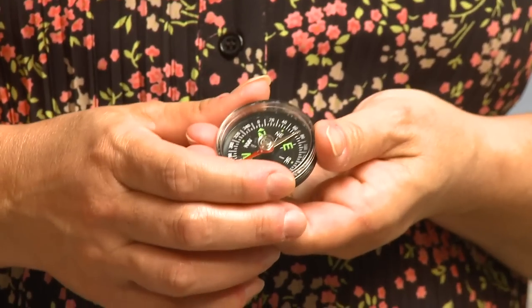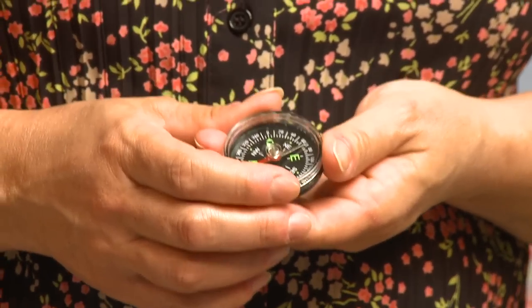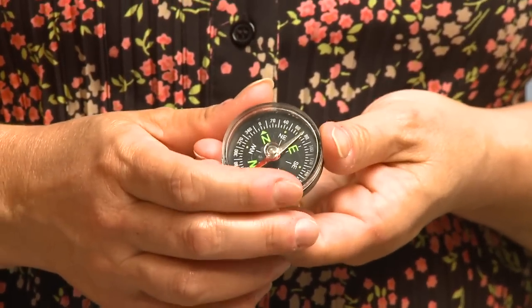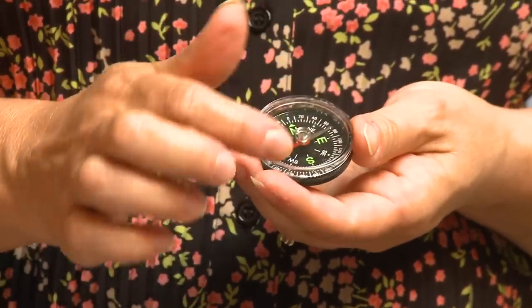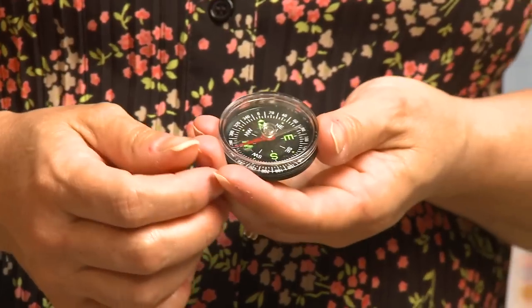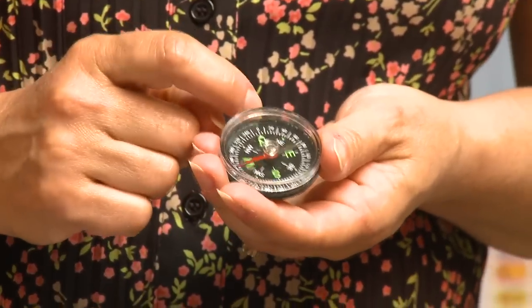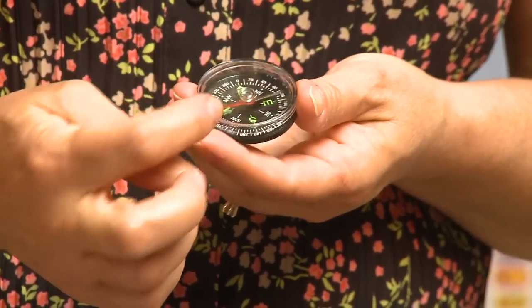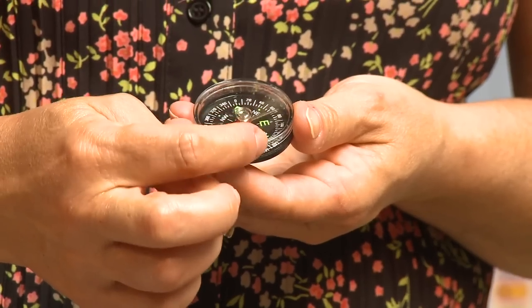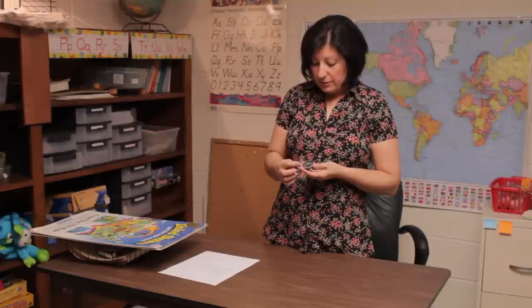Step one would be to explain to the child what a compass is used for. They need to understand the four basic geographic directions. A good way to help them remember that is to use a mnemonic memory device such as Never Eat Soggy Waffles. This will help them remember N is for North, Never, E, Eat, East, S, South, Soggy, and W, West, Waffles.